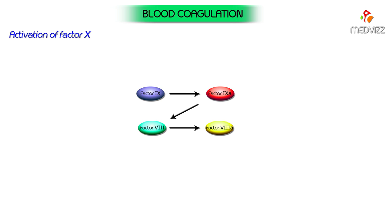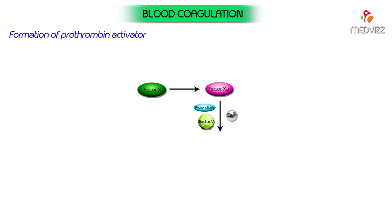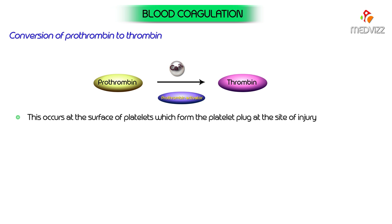Factor 10 is activated to form factor 10a in the presence of activated factor 8, calcium, and phospholipids. Formation of prothrombin activator: activated factor 10, along with phospholipids released by activated platelets, activated factor 5, and calcium, forms a complex called prothrombin activator. Conversion of prothrombin to thrombin is caused by prothrombin activator in the presence of calcium, occurring at the surface of platelets which form the platelet plug at the site of injury.